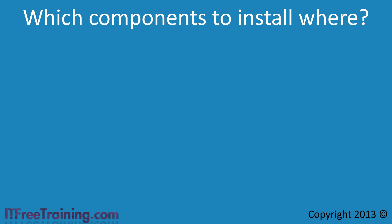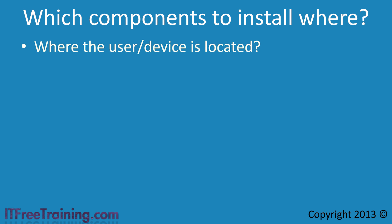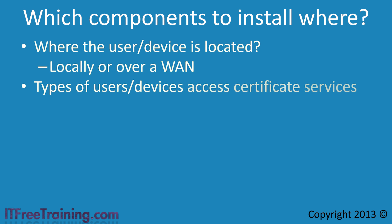When deciding which components you want to install and where, there are two main factors that you need to consider. First, where the user or device is located that is going to be using Certificate Services. Is that user or device on a local network or connecting via a wide area network? The next point to consider is what type of user or device is accessing Certificate Services.